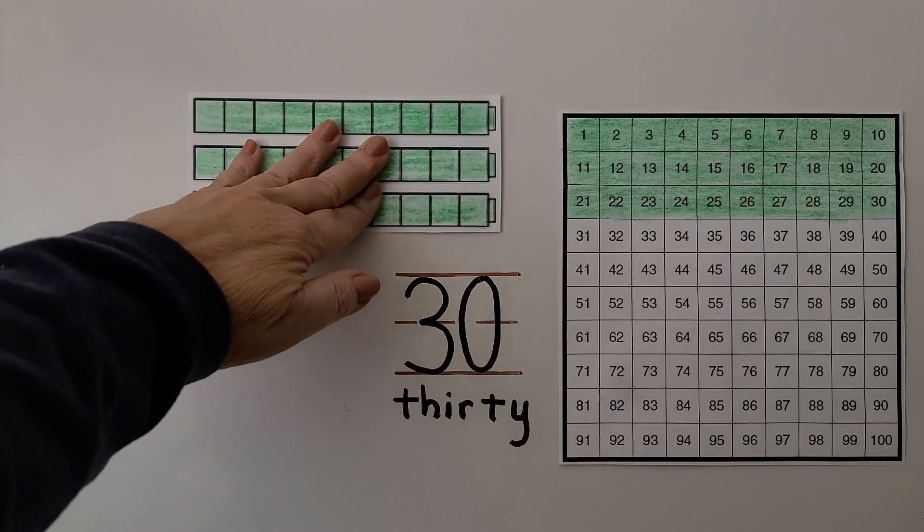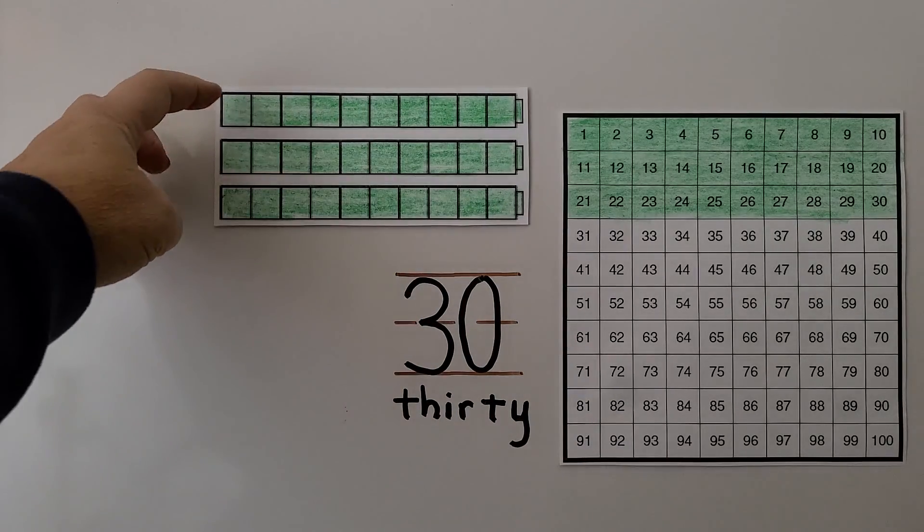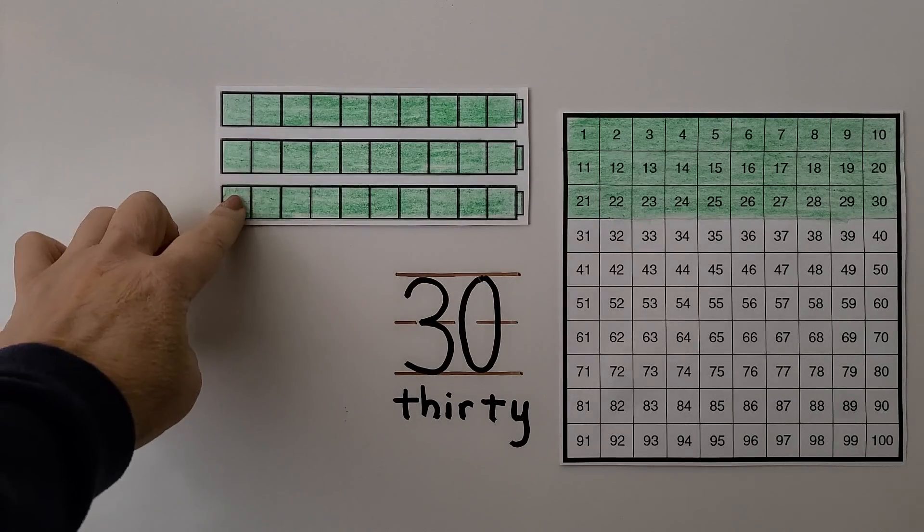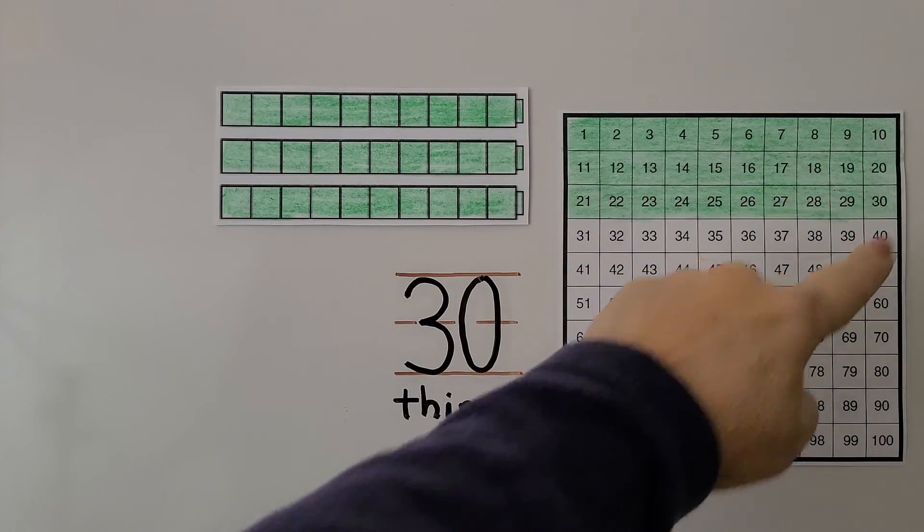If we turn these sideways, we have 3 rows of 10: 10, 20, 30. 10, 20, 30.